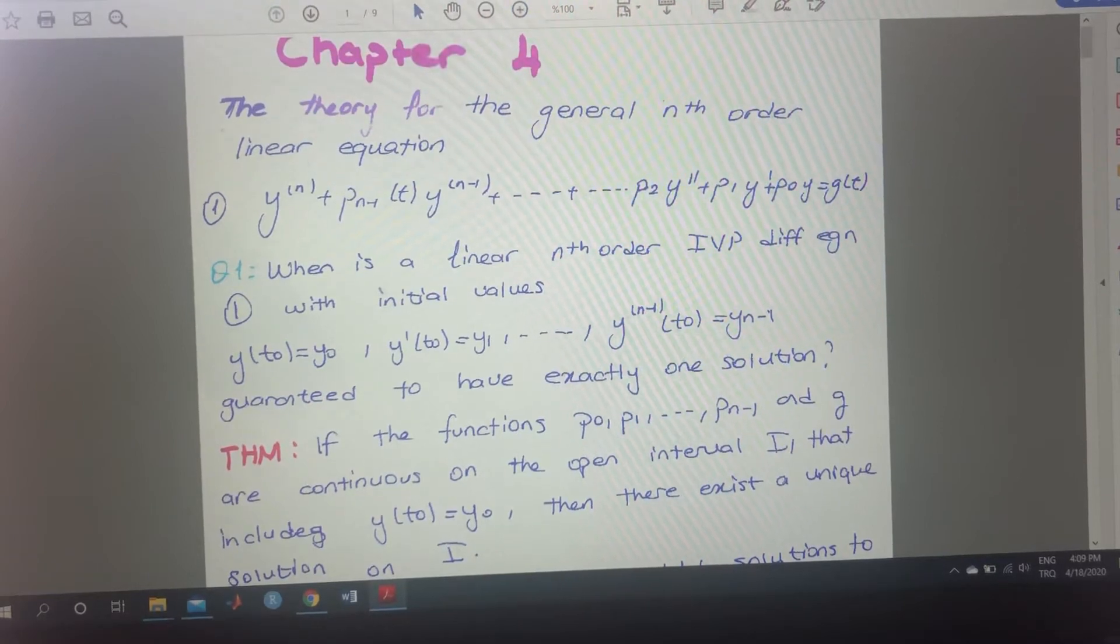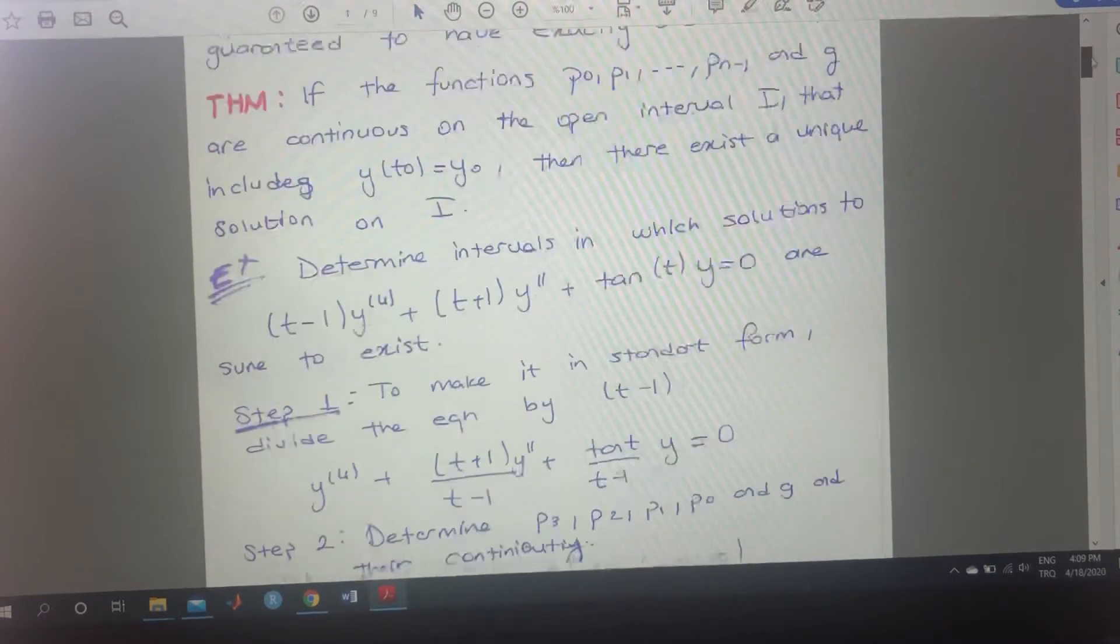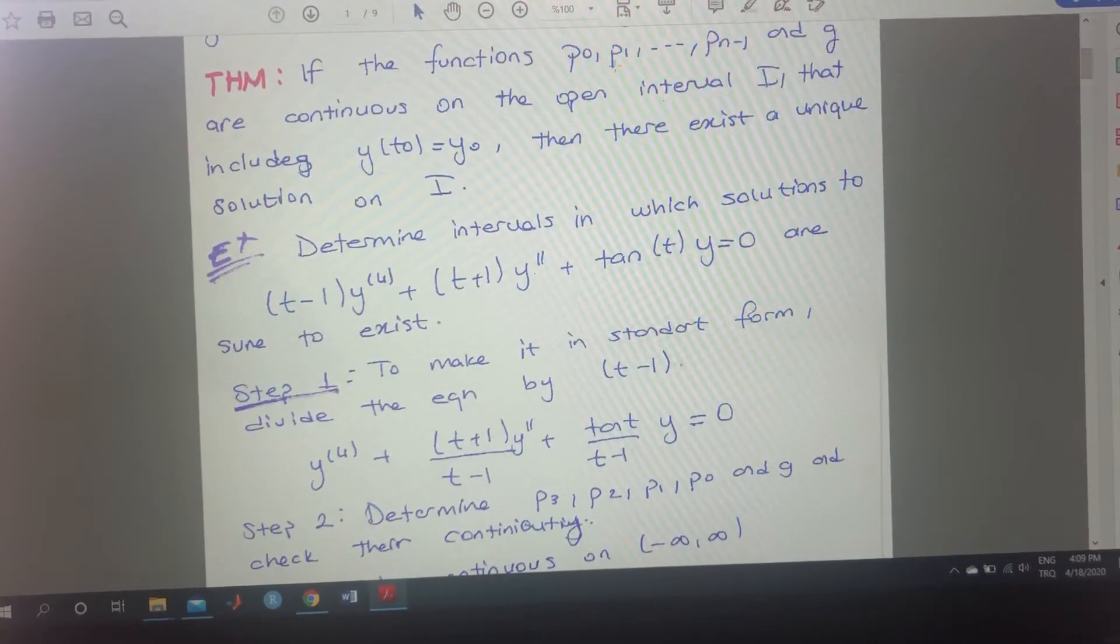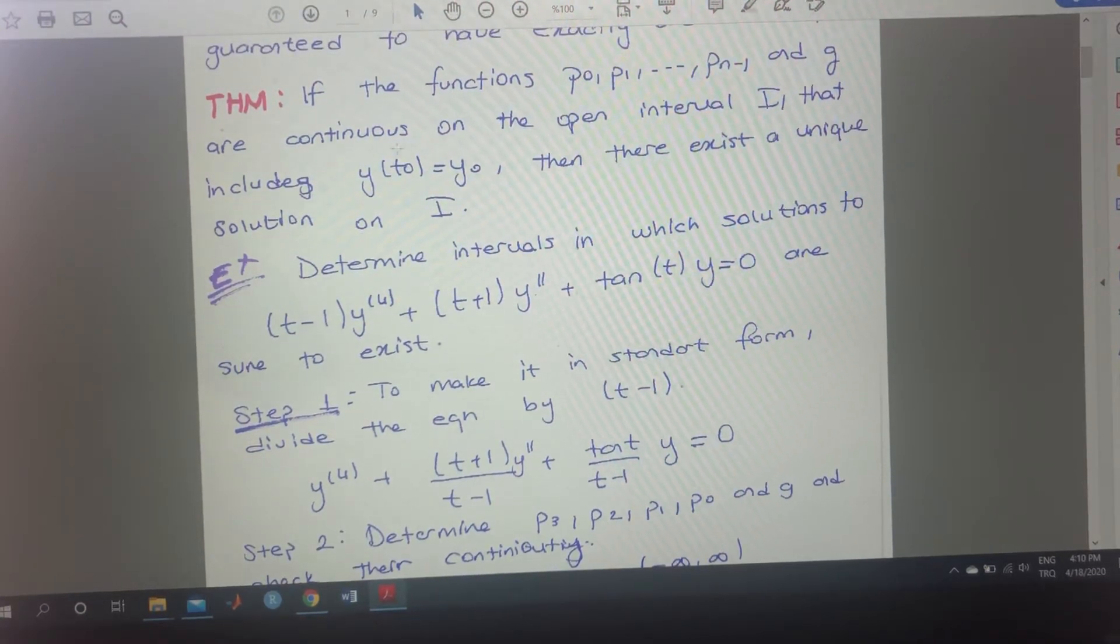The idea is actually the same what we did in first order and the second order. What we are doing, our coefficients should be continuous in the interval that is given with the initial condition. That's the idea.